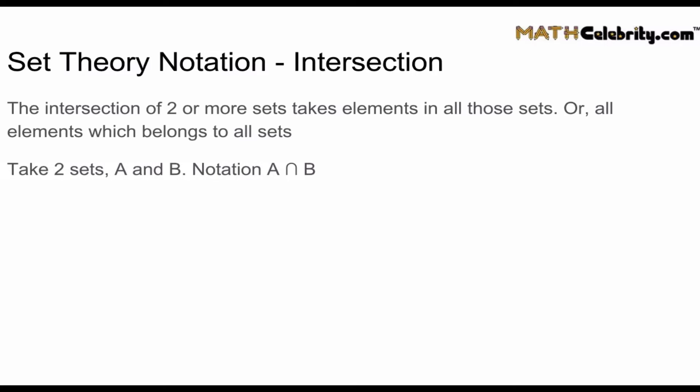So again, let's take two sets, A and B. Our notation is read A intersection B, and it kind of looks like an upside down U. Let's take set A as one, three, five, seven, nine. And we'll take set B as two, three, four, five, six. And what we want to build is A intersection B, or read out in a sentence, all elements in set A and in set B.